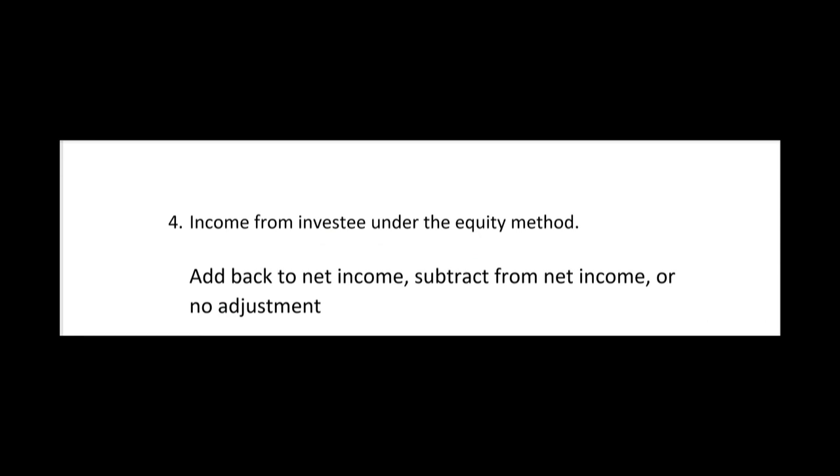Number four: income from investee under the equity method. You're accounting for an investment in an investee, they earned money, and you put that on your income statement as income from investee. Under the indirect method, this needs to be subtracted from net income in the operating section, because it doesn't represent cash received — it's accrual basis income. Under the direct method, you wouldn't touch this at all since you're not starting with net income.